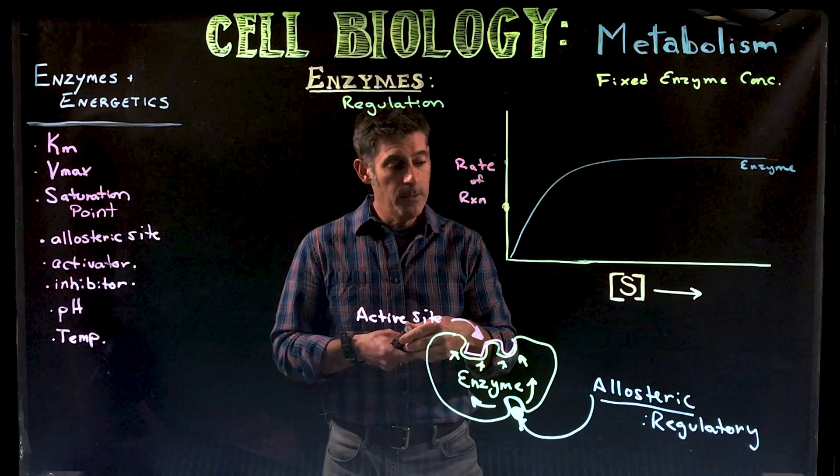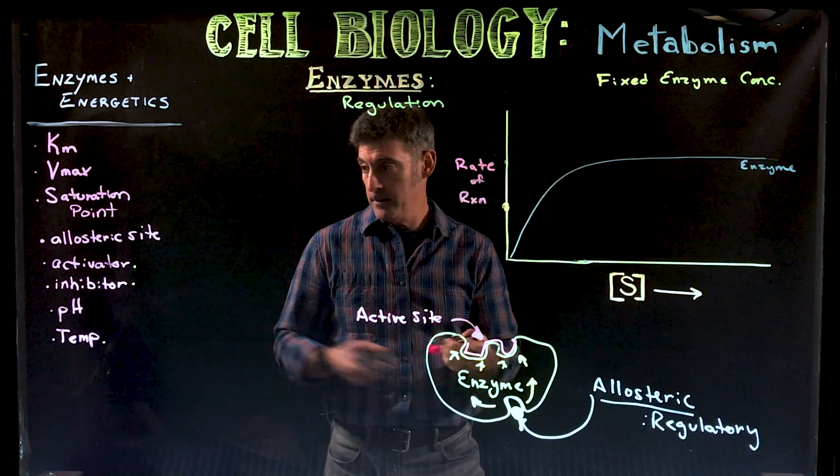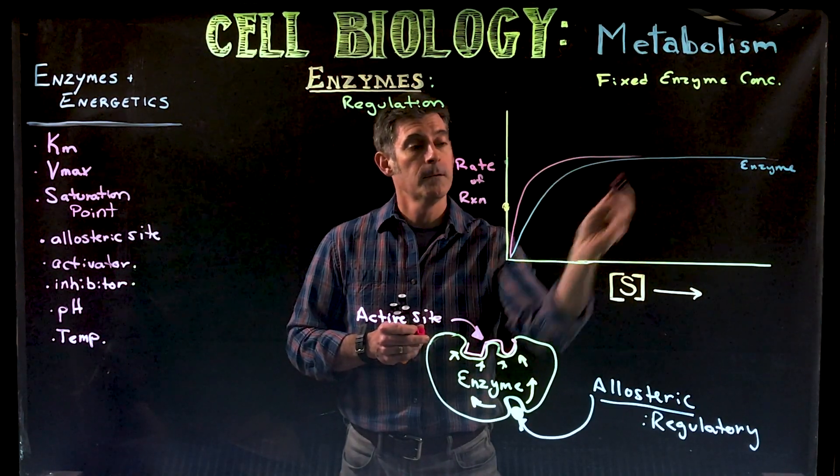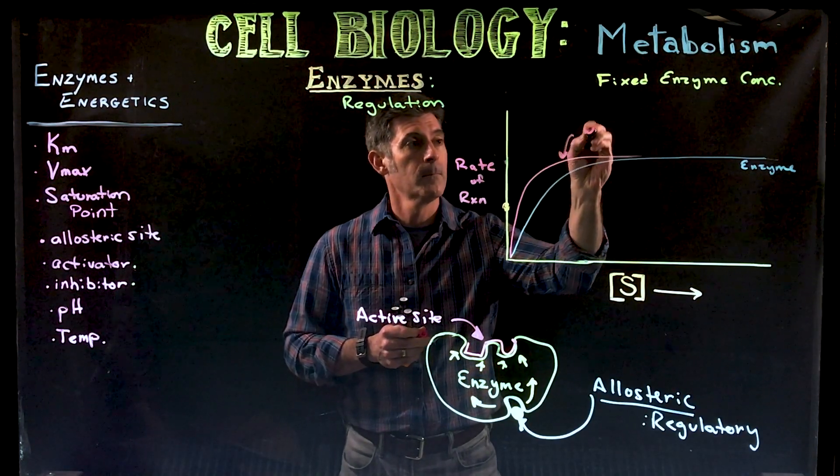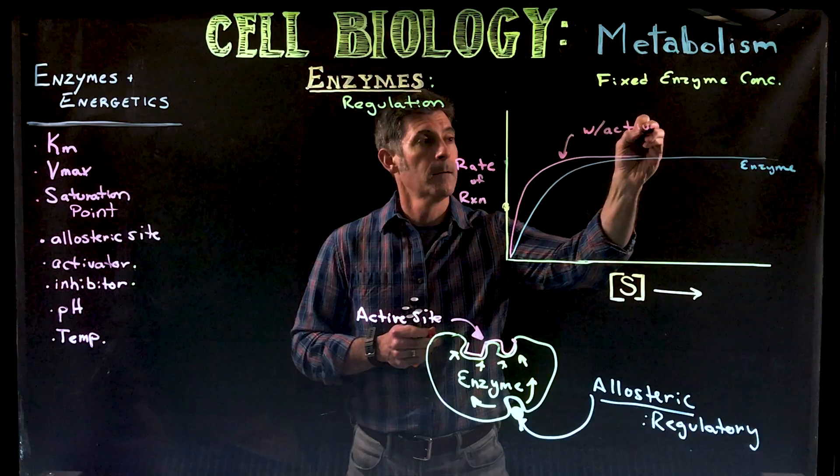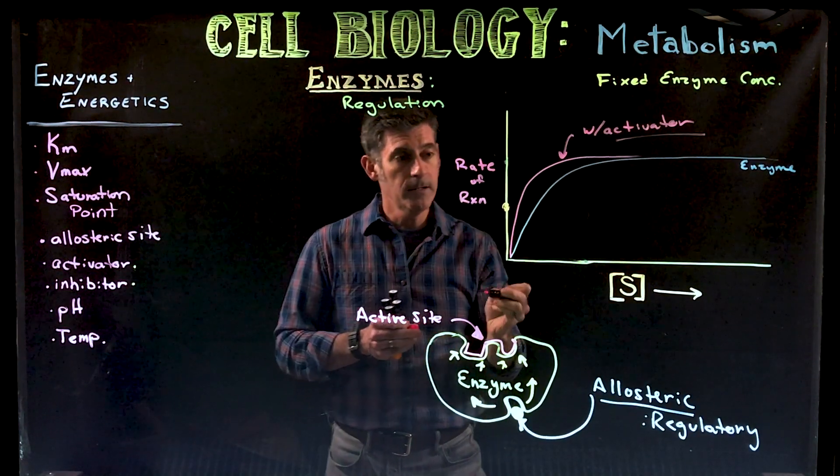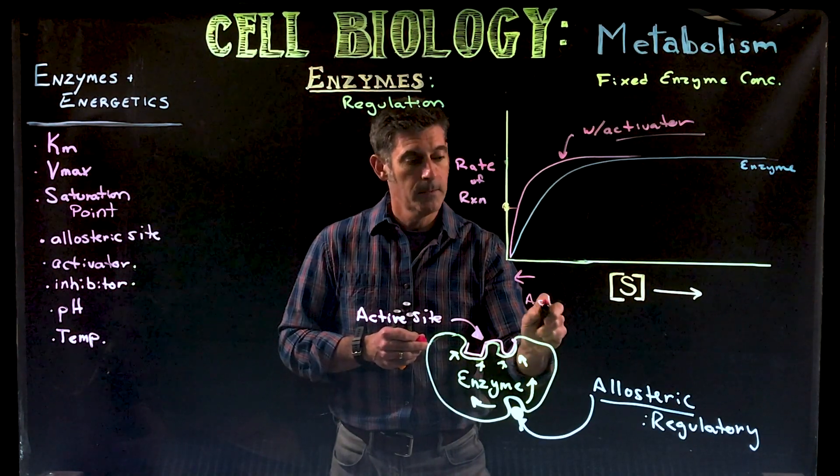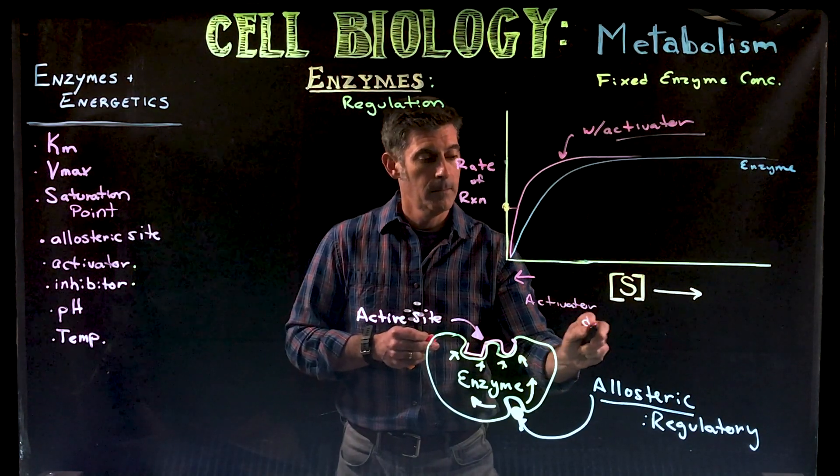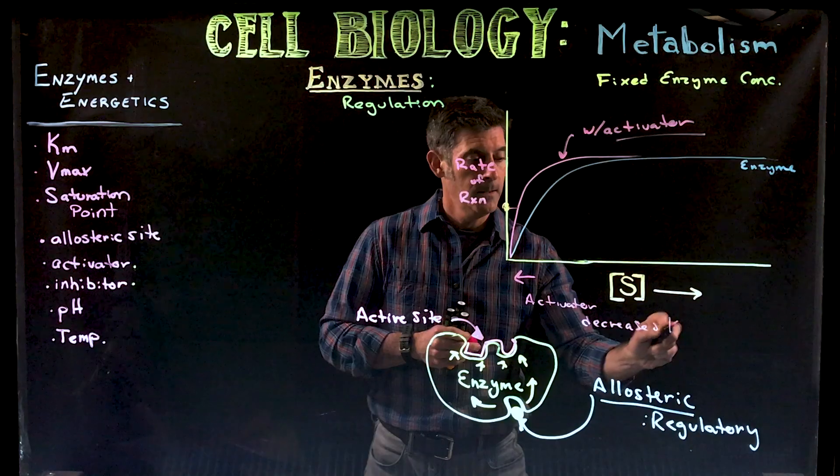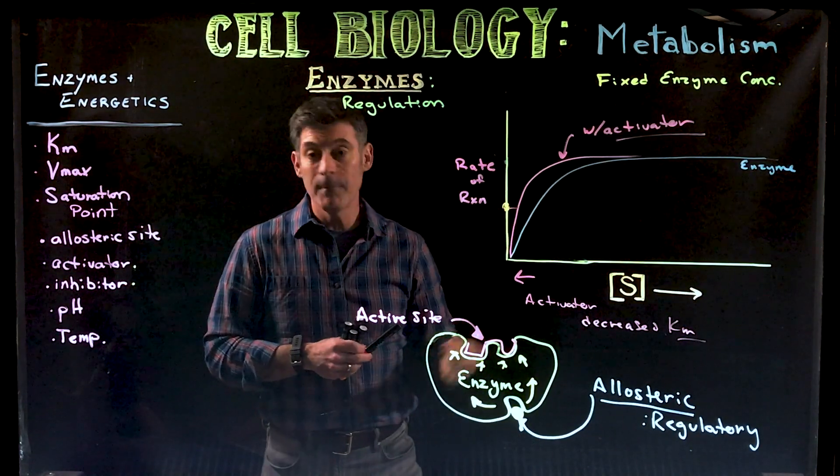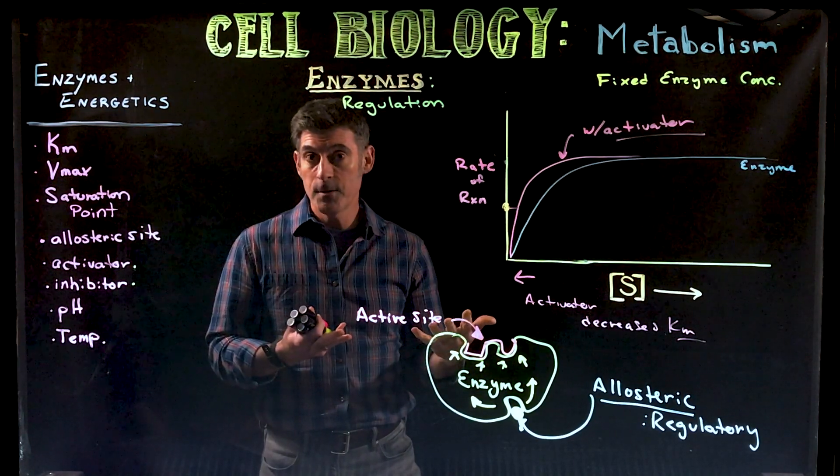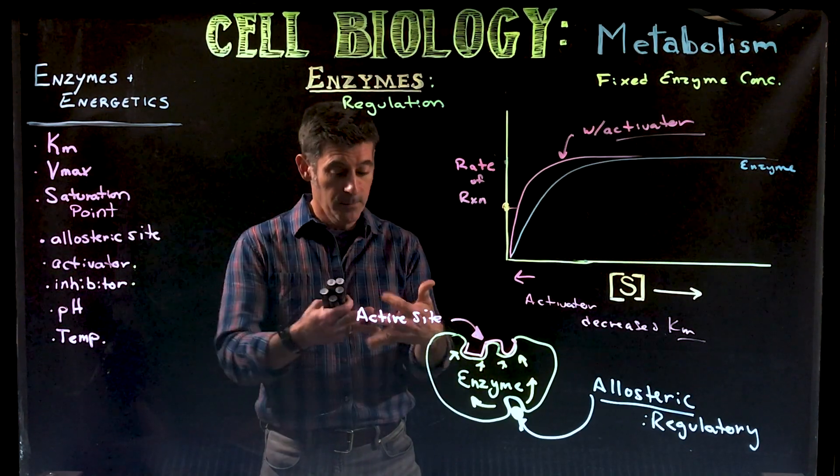What can happen though is if we were to add an allosteric activator, we could potentially change this curve to look more like this. With an activator we've now decreased the Km. So an activator decreases the Km value. If you remember, a small Km value is good. A small Km value means the enzyme interacts with the substrate even when there are very few substrates around, so it's really quick to bind together.